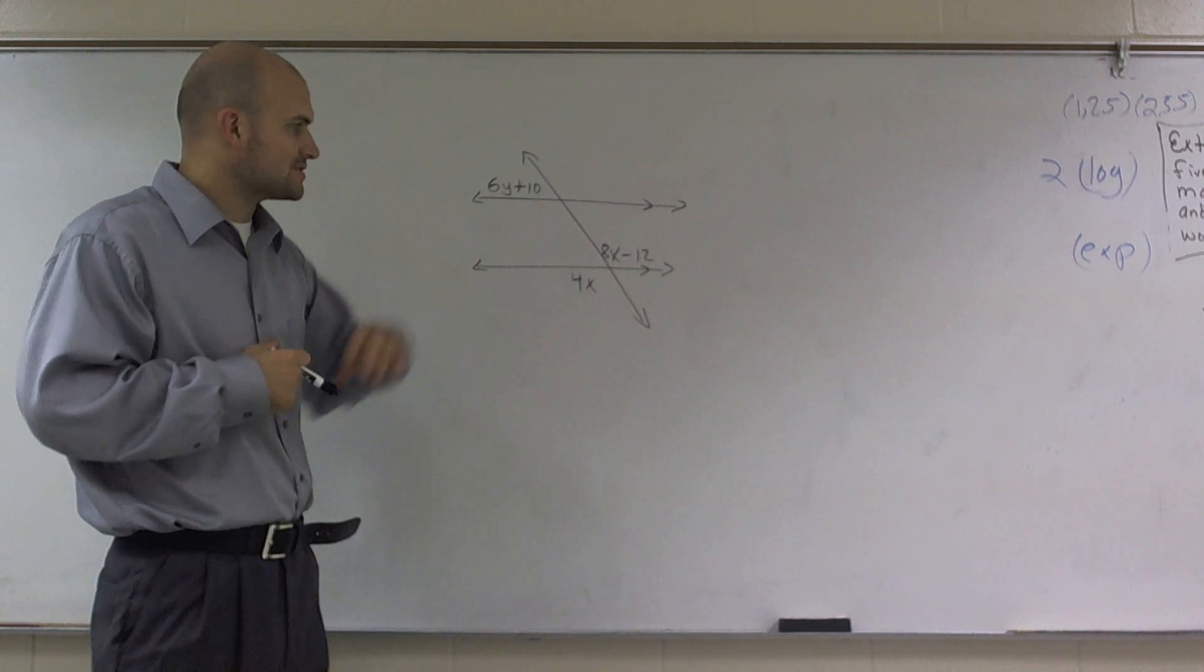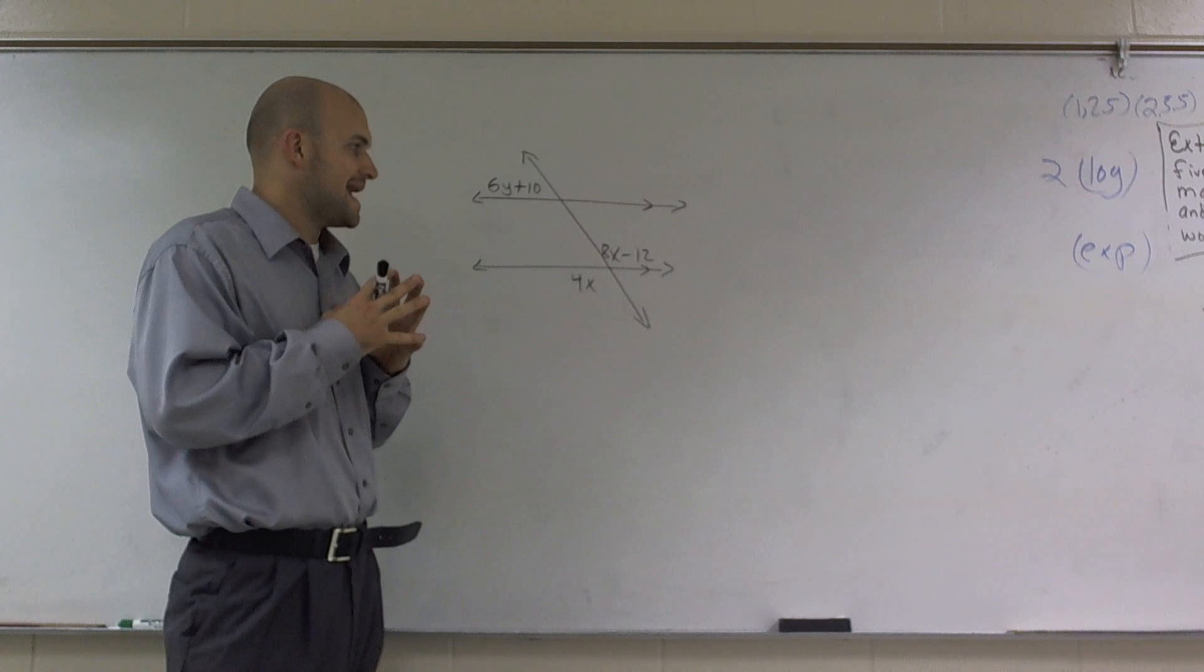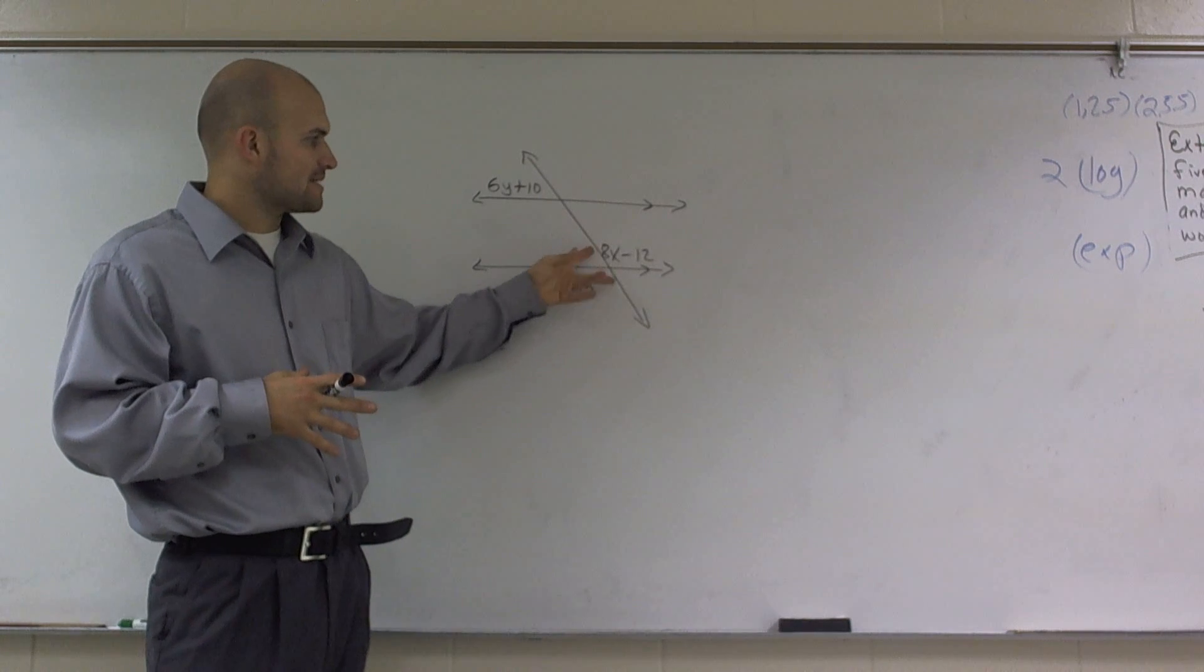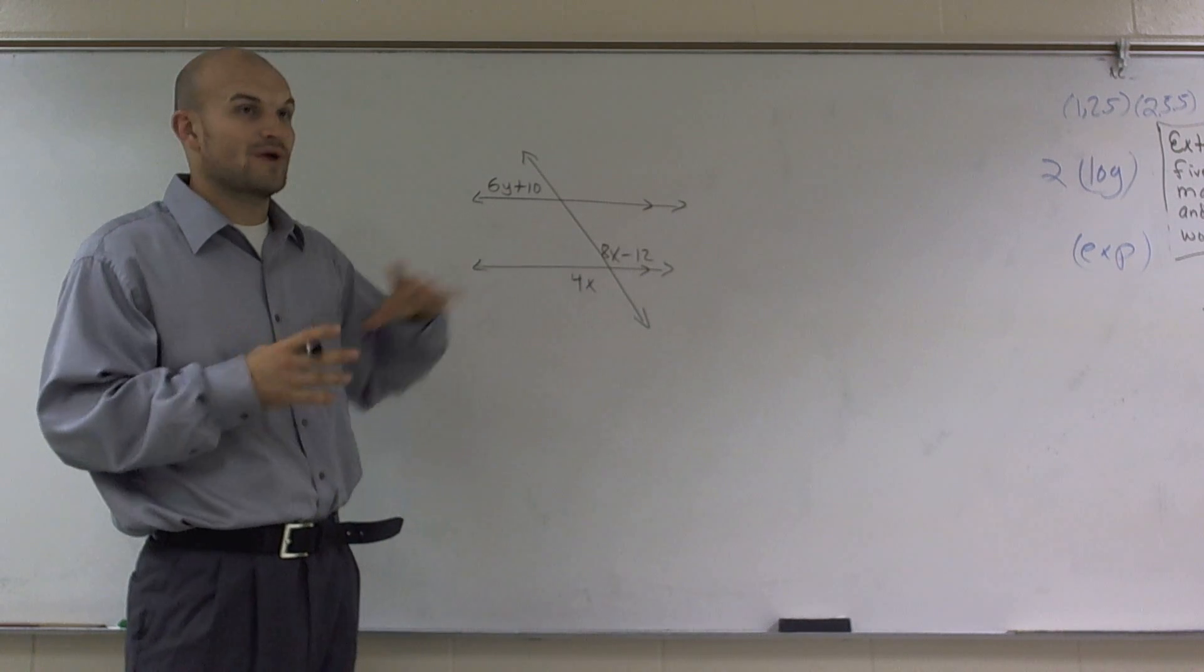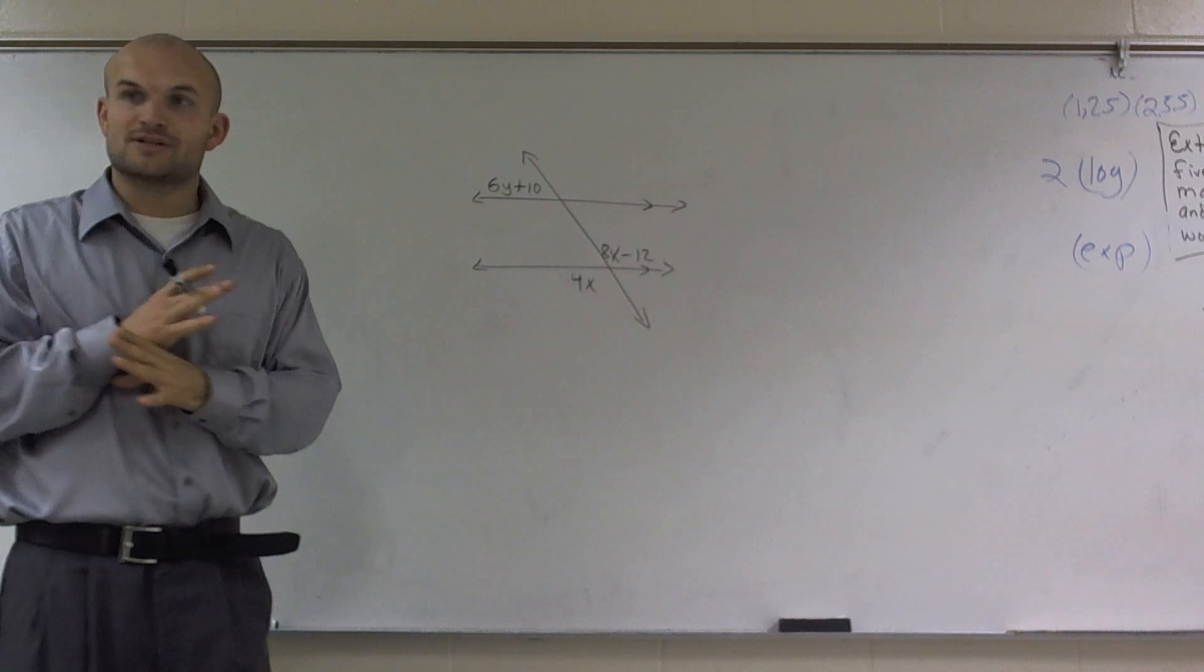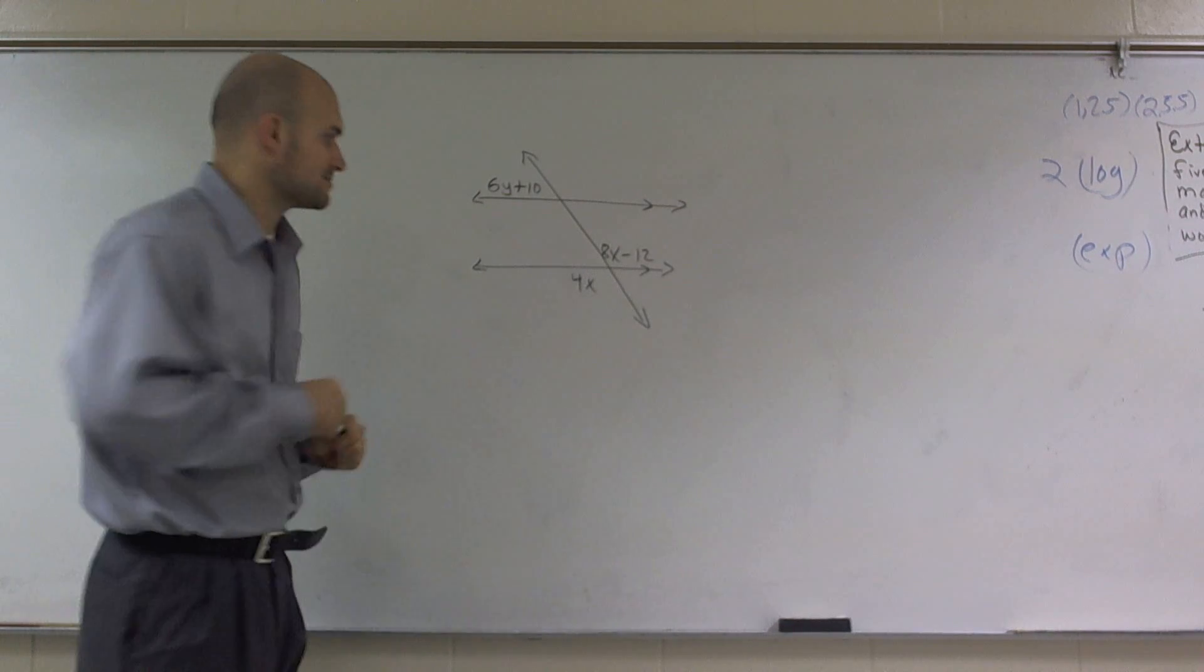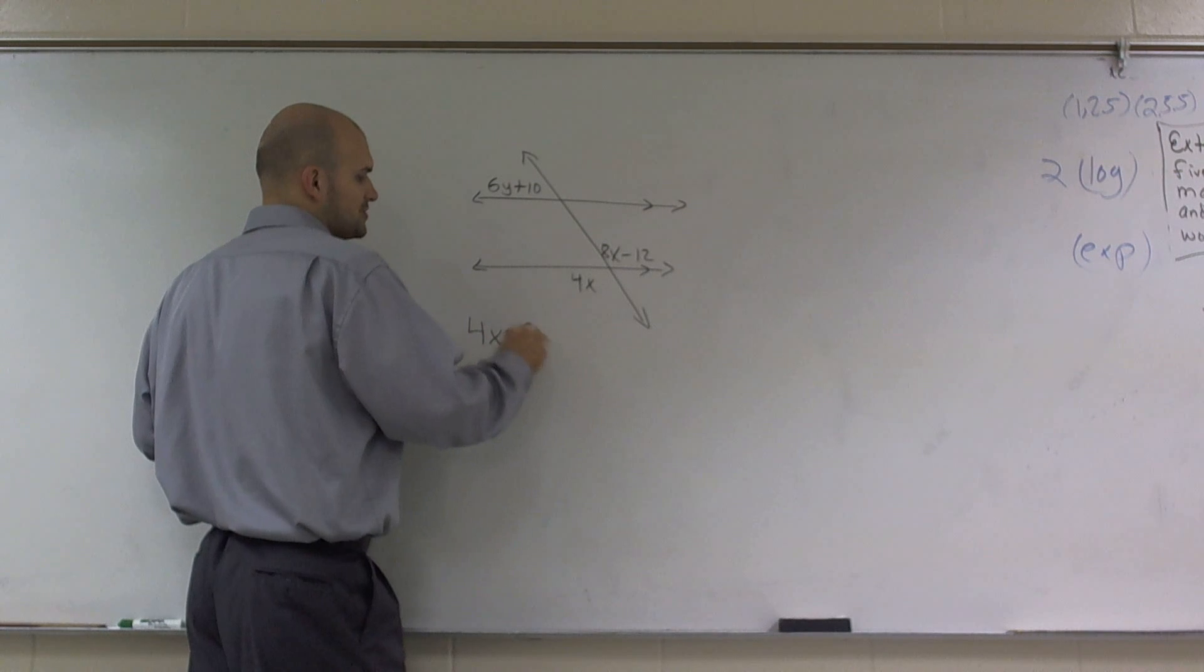Here, I have two intersecting lines. And whenever I have two intersecting lines, I have some angles we can use. One thing is, any two angles that make a straight line, we know equal 180 degrees. However, these two angles are directly across from each other at an intersection. Therefore, we call them vertical angles. Therefore, we know that vertical angles are equal in measure to each other.